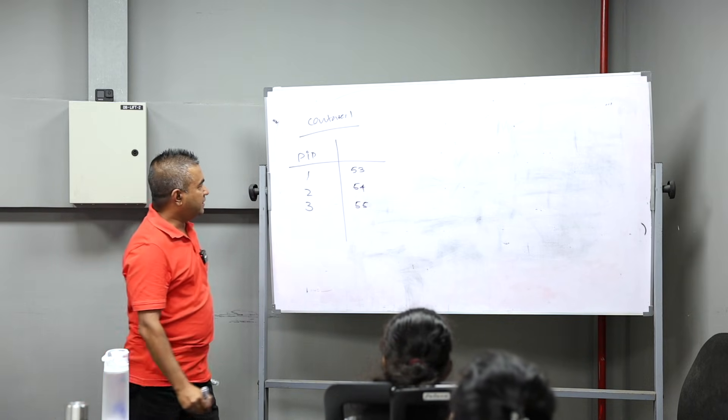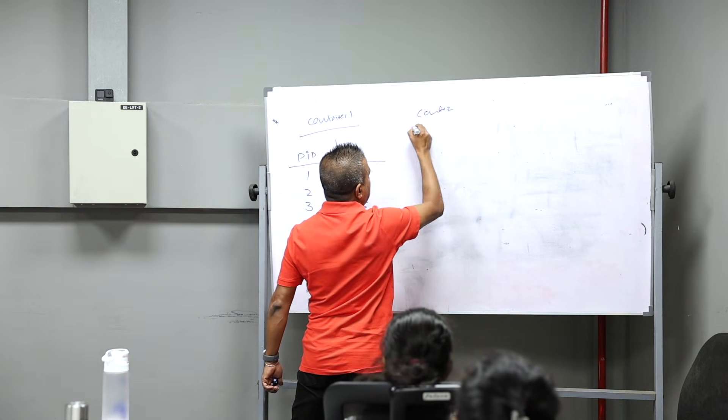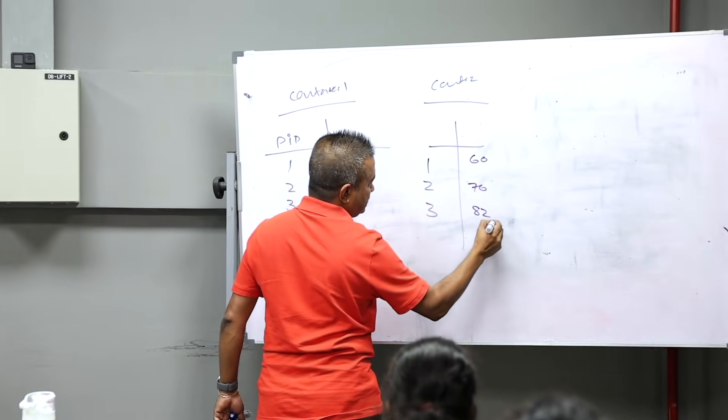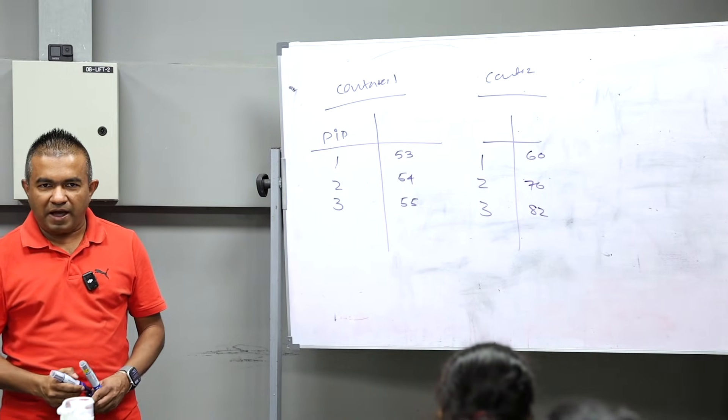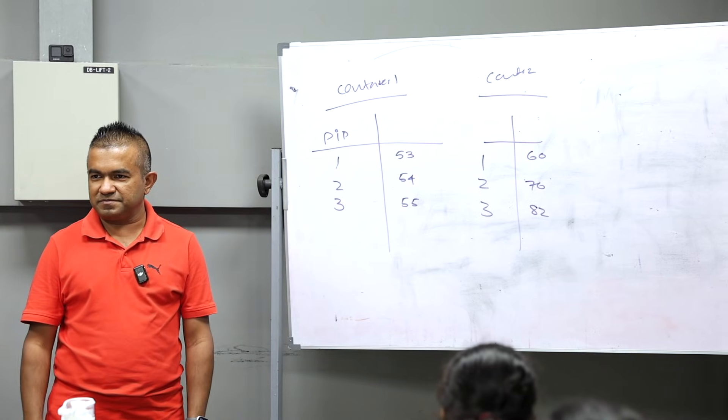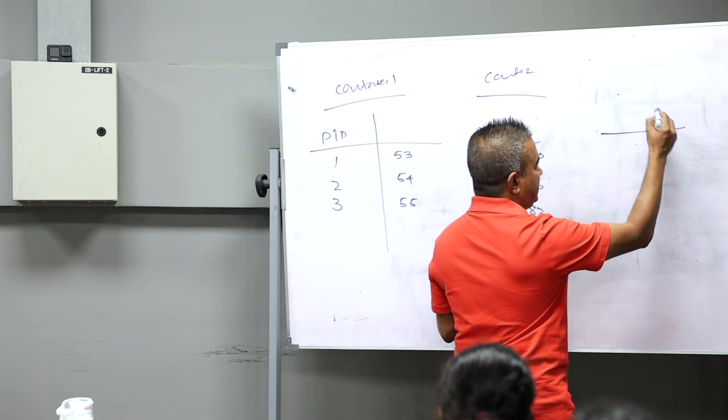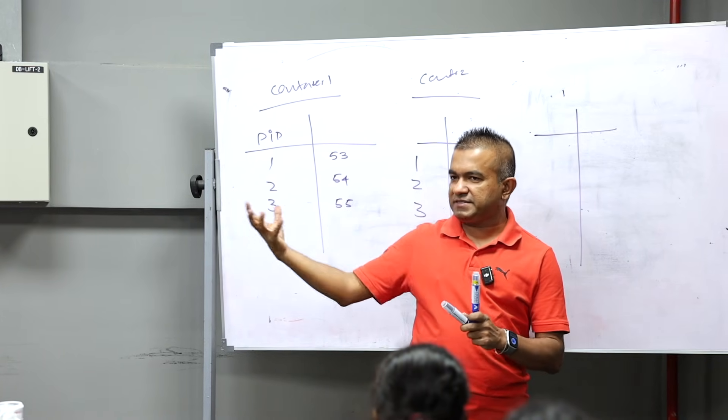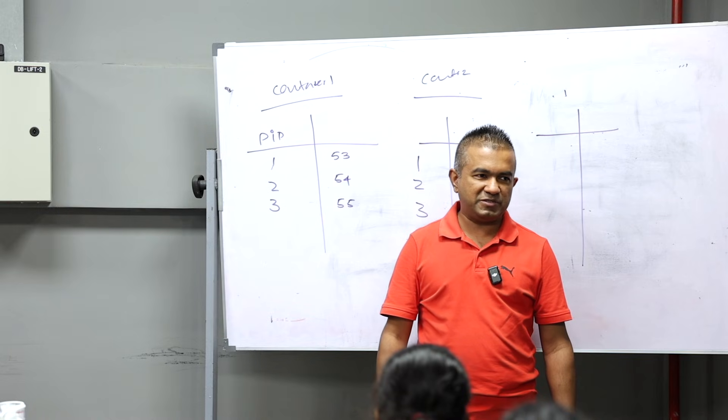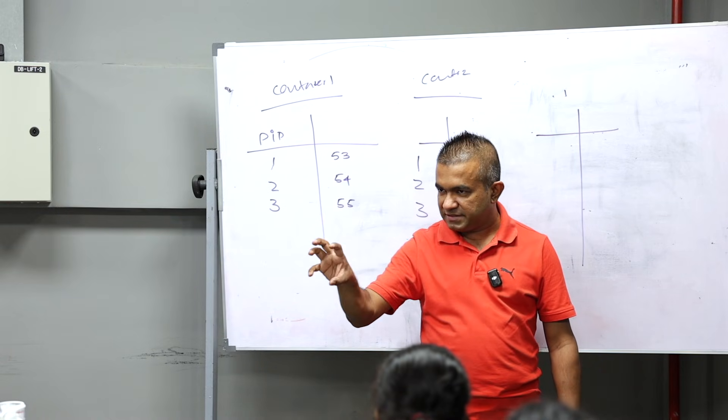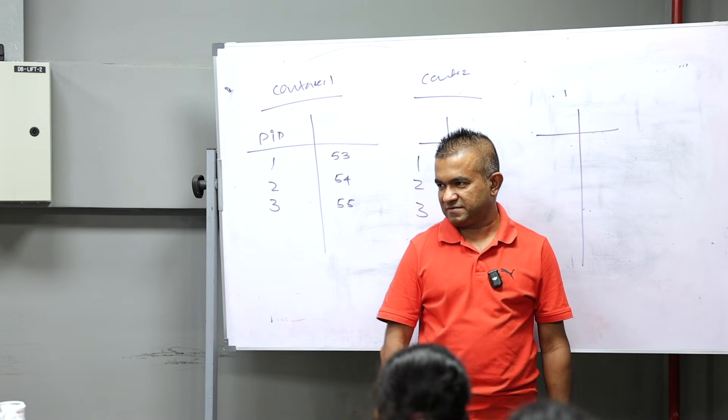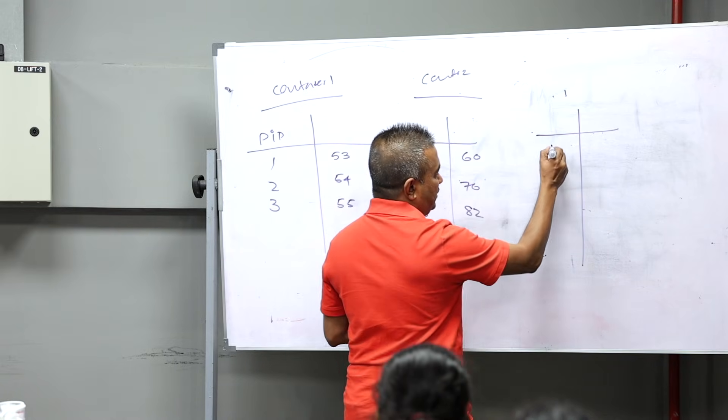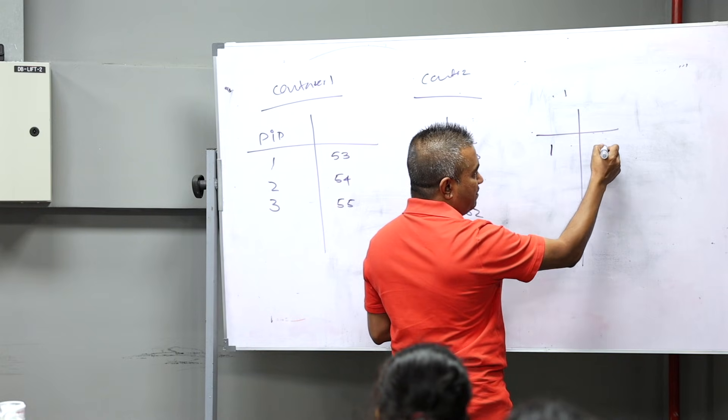Container 2 creates PID 1, 2, 3. This may be 60, 70, 82 something like this. Now here you get the Java program. Java program comes to container 3. This is very misunderstood. The Java process creates 10 different threads. Keep in mind, Java threads are not processes to the kernel.